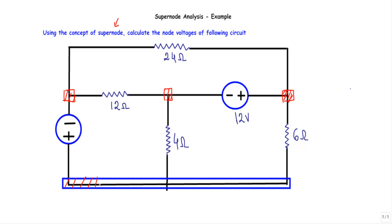Usually during node or super node analysis, we take this terminal as our reference node or ground terminal. Therefore, this node will have a voltage of V not equal to zero volt — this is our reference node with a voltage of zero volt. With respect to this reference, this node will have a voltage of V1, this node V2, and this node V3.